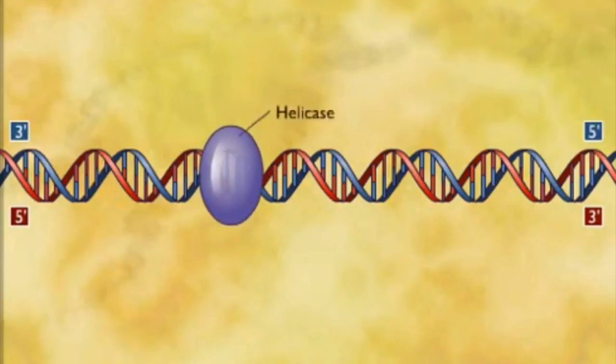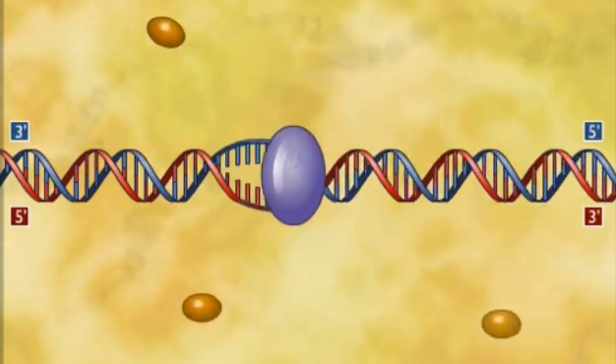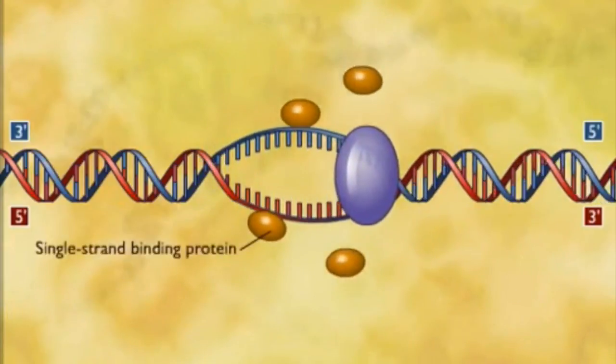Helicase is an enzyme that untwists the double helix at the replication fork, separating the two parental strands and making them available as template strands.